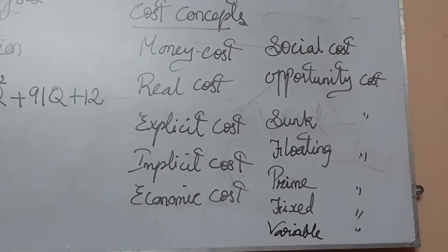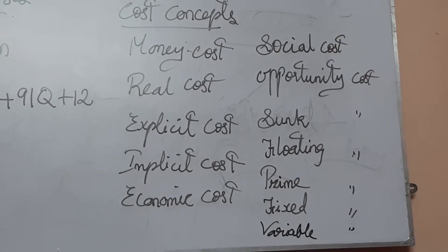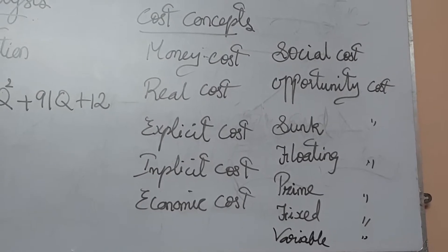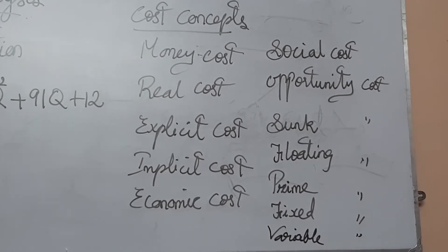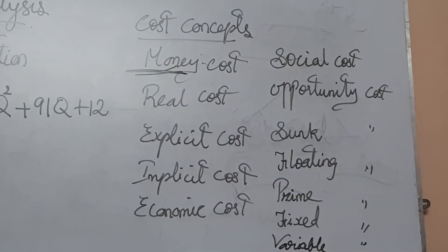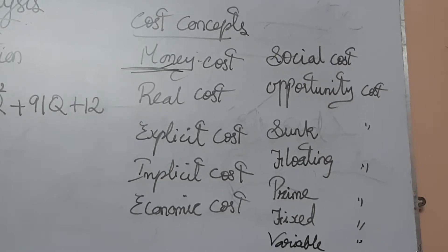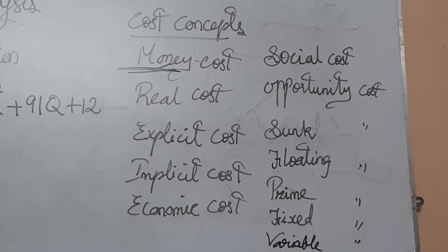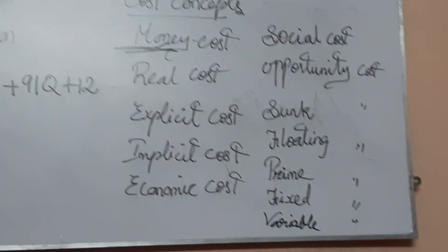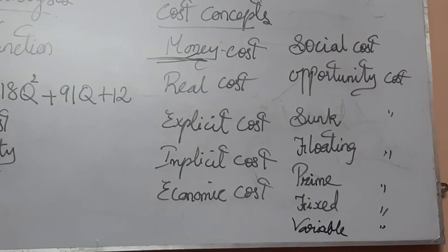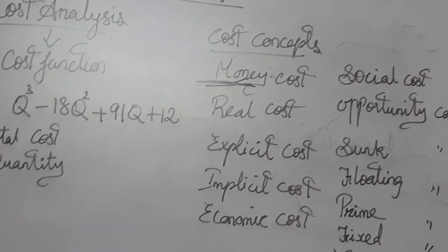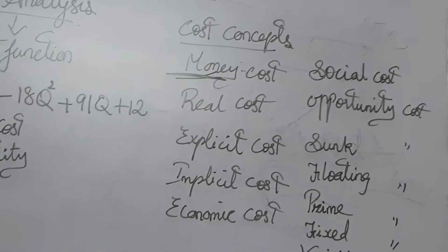First, money cost. Production cost expressed in money terms is called money cost. For example, when we buy raw materials or give wages to labor, we spend money — wherever we are spending money as it is, it is called money cost.